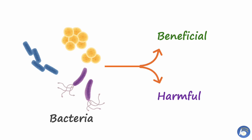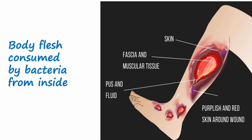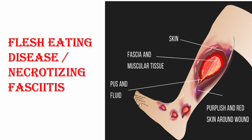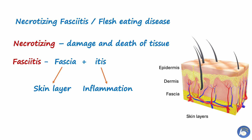We all know bacteria can be beneficial as well as harmful for living beings. Among the disadvantages of bacteria, there is one condition where bacteria start to eat the host body's flesh from inside. In medical terminology it is called necrotizing fasciitis. Here 'necrotizing' means damage and death of tissue. 'Fasciitis' combines two words: 'fascia,' the tissue layer situated below the skin which covers fat, muscles and nerves, and 'itis,' meaning inflammation. So fasciitis means inflammation of tissue.